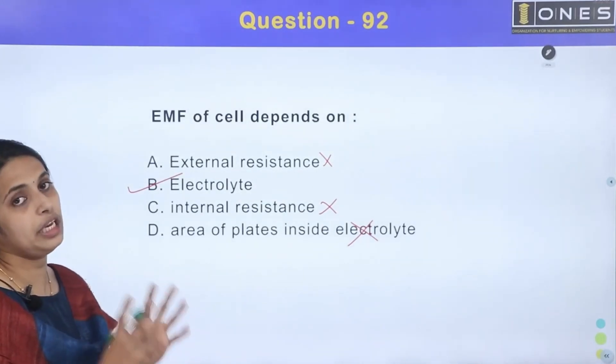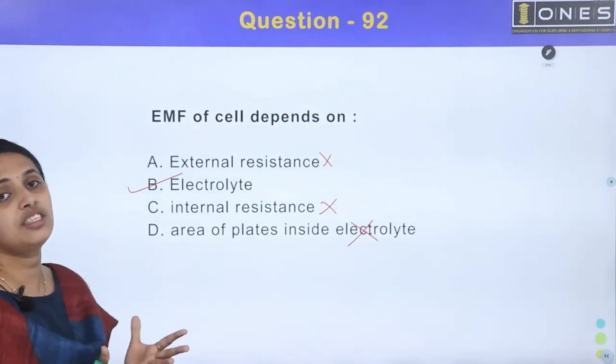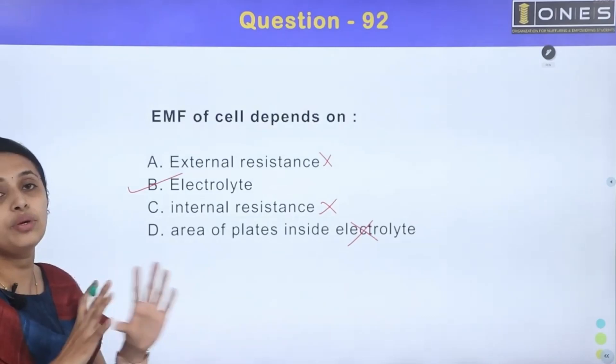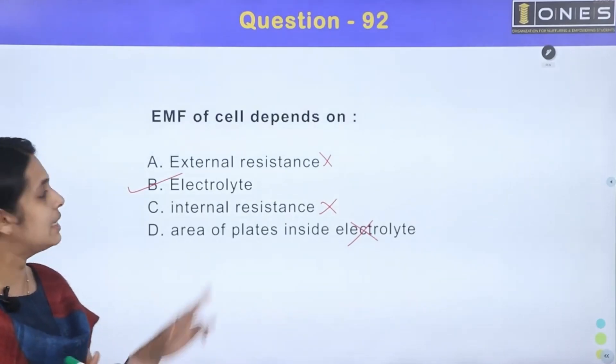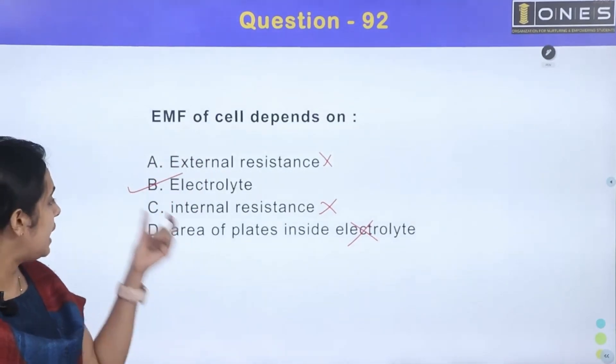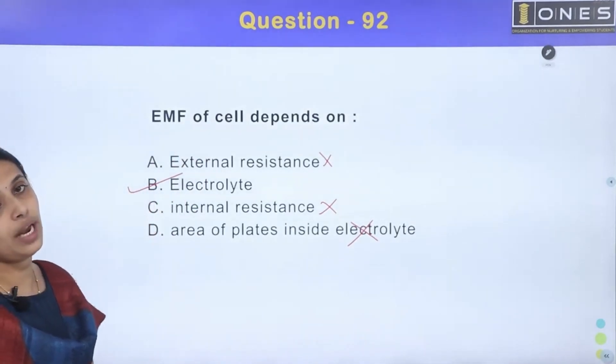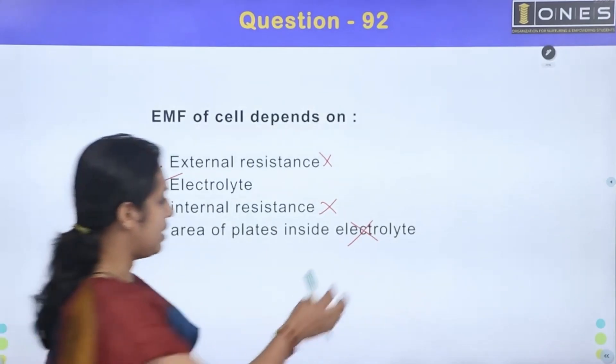If we look at the electrode material, it depends on the shape, size, and area. The EMF of the cell — option B, electrolyte — is the answer it depends on.